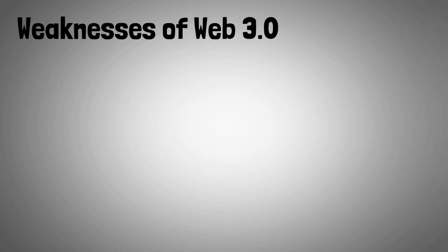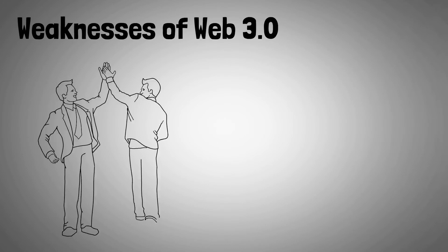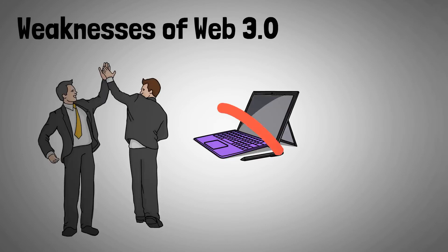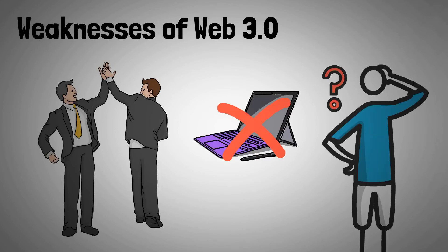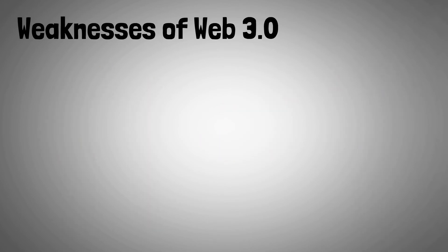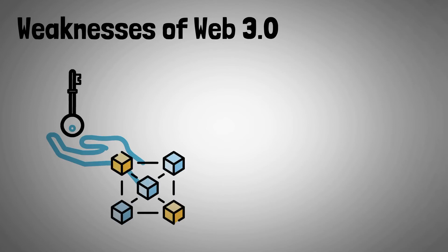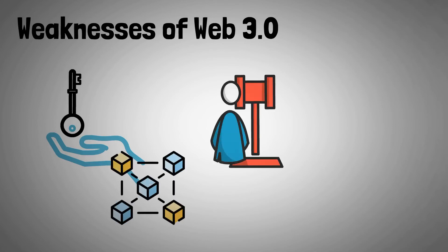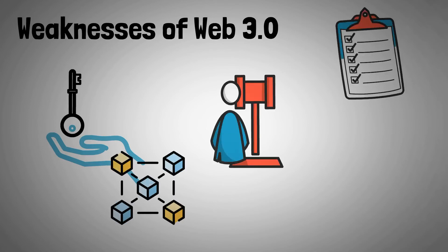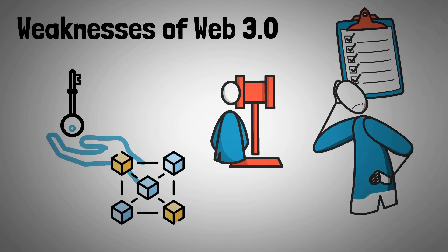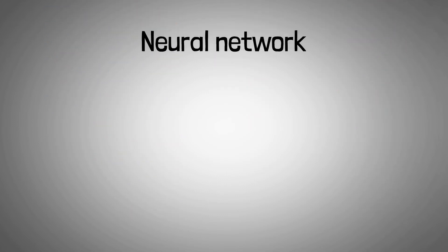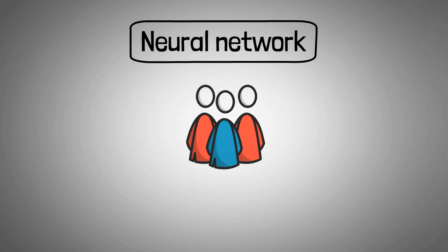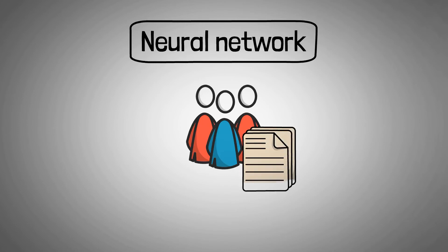Unfortunately, Web 3.0 also has a few weaknesses. It is a future technology and not all gadgets will be able to use it. It may be difficult for newcomers to understand. Security and ownership are decentralized, requiring extensive legal changes. Regulation will be more difficult without big tech companies or central entities. As Web 3.0 is a neural network, it is easier to access personal and political data.